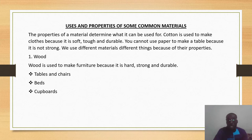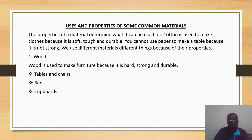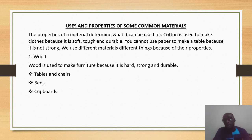We use different materials for different things because of their properties. For instance, wood is a very strong material and can be used for tables, chairs, beds, cupboards, and so on.